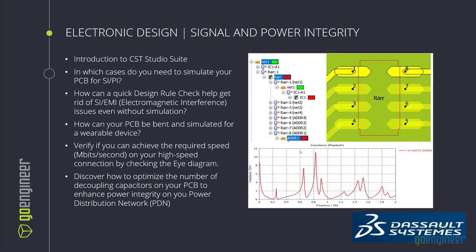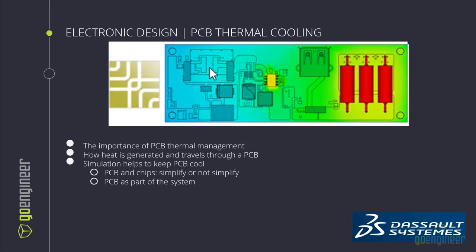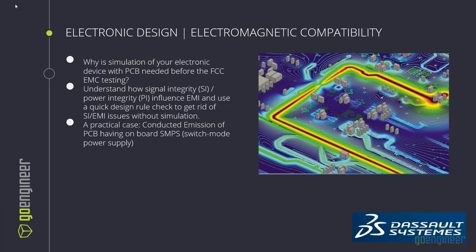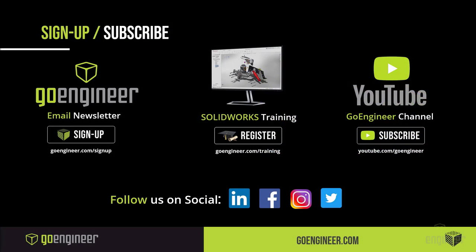That concludes Part 1 of this three-part series. Part 2 will address PCB thermal cooling, showing the importance of PCB thermal management and how heat is generated and travels through a PCB. In Part 3, we will discuss why simulation of electronic devices with PCBs is needed before normative testing such as FCC EMC normatives, and look at reducing electromagnetic interference issues through design rule checks. Thank you for watching. Please subscribe and leave a comment if you have a topic you'd like us to cover. Visit GoEngineer.com for access to professional training, upcoming events, and more.